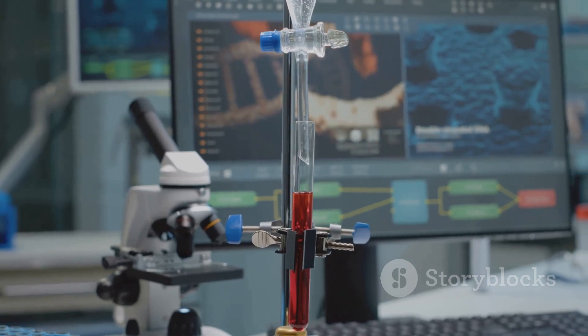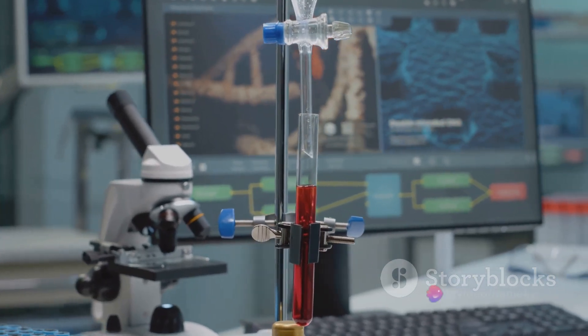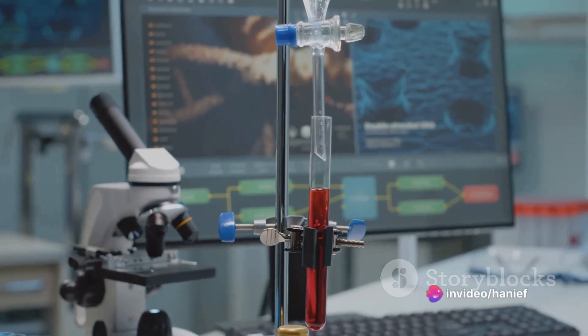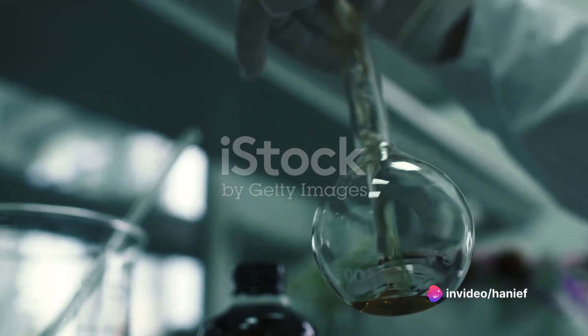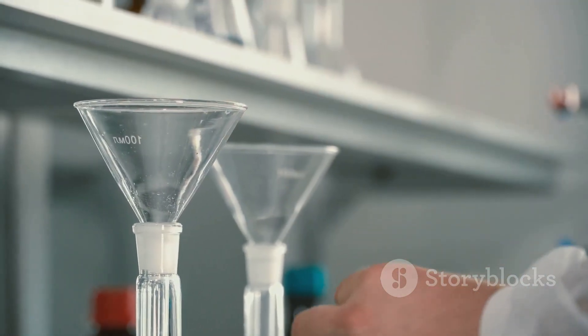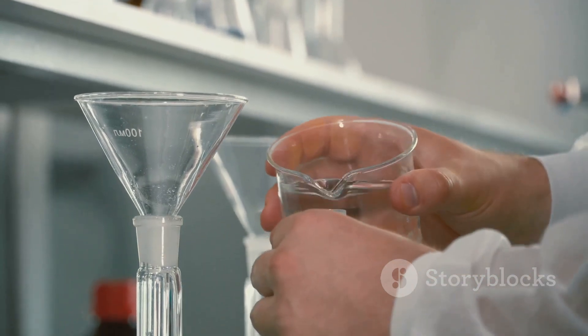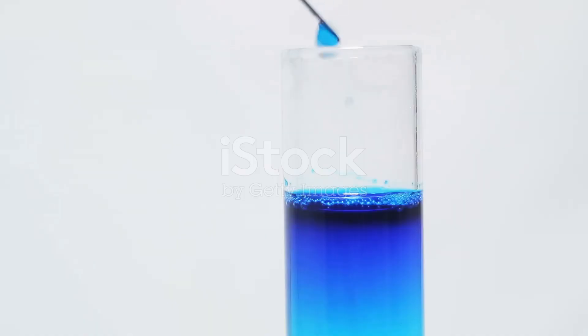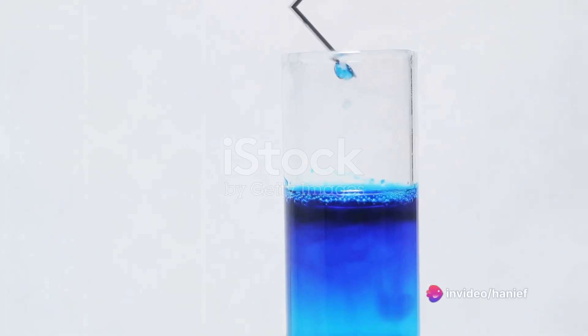To begin, imagine a burette—a long graduated glass tube with a tap at one end. Fill it with the known solution, in this case the sodium hydroxide. On the other hand, pour the unknown solution, the hydrochloric acid, into a flask. Add a few drops of a special ingredient: the phenolphthalein indicator. This color-changing compound will serve as a vital signpost in our titration journey.